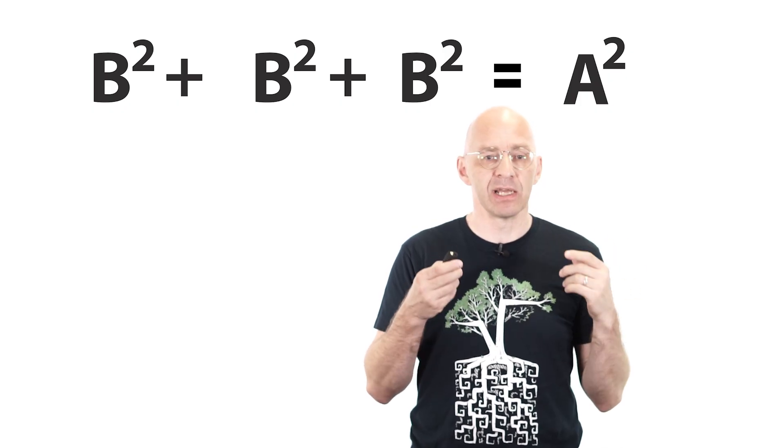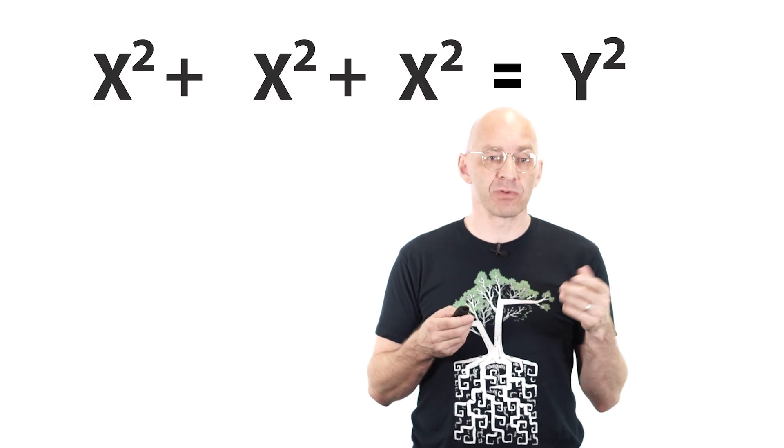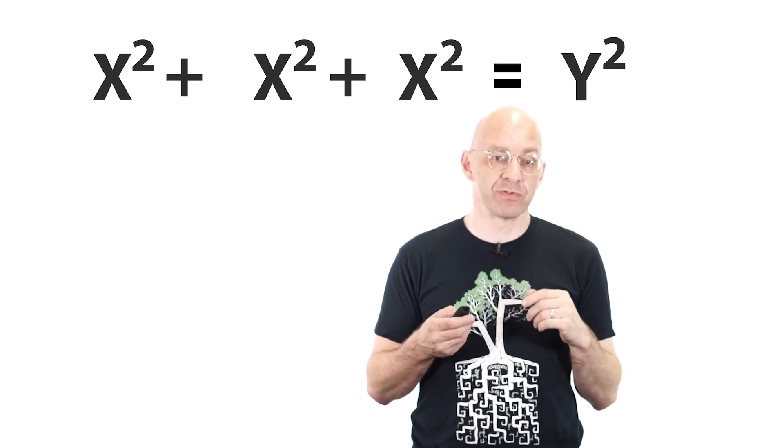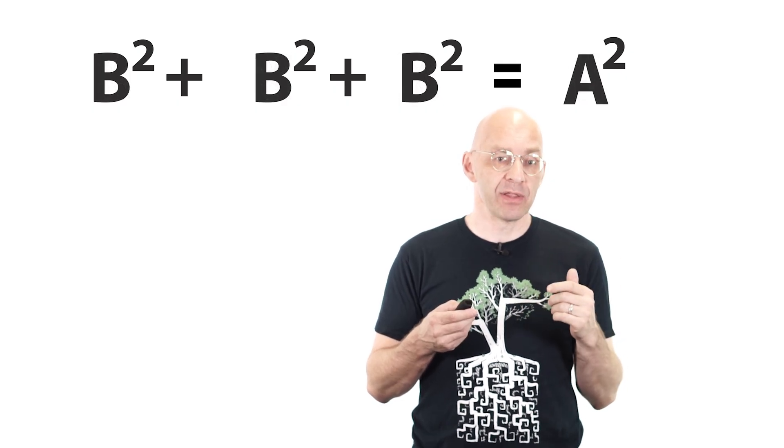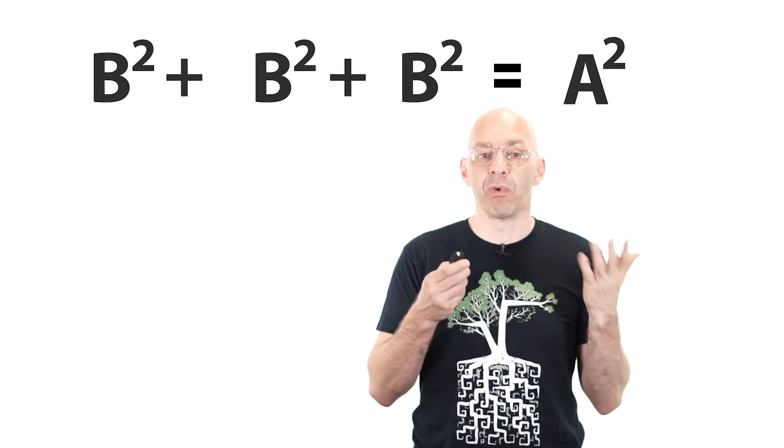But then of course 3b squared equals a squared. That's the same as saying that b squared plus b squared plus b squared equals a squared. So what does this mean? This means that if root 3 were rational then the equation x squared plus x squared plus x squared equals y squared would have positive integer solutions and that b squared plus b squared plus b squared equals a squared would be the smallest such solution.